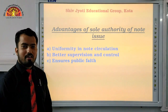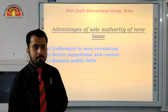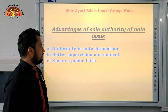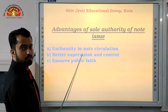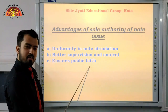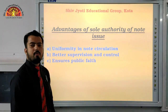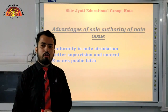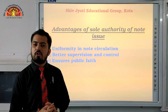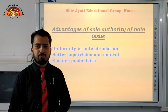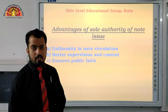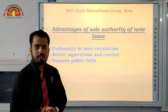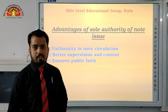Supervision is essential to control fake currency. To prevent this, the central bank acts as a better supervisor. The third advantage is that it ensures public faith. Currency notes have a distinct paper quality, unique designs, and special security marks to help people recognize genuine notes. These features generate public trust; otherwise, fake currency would circulate and create major problems for the country.